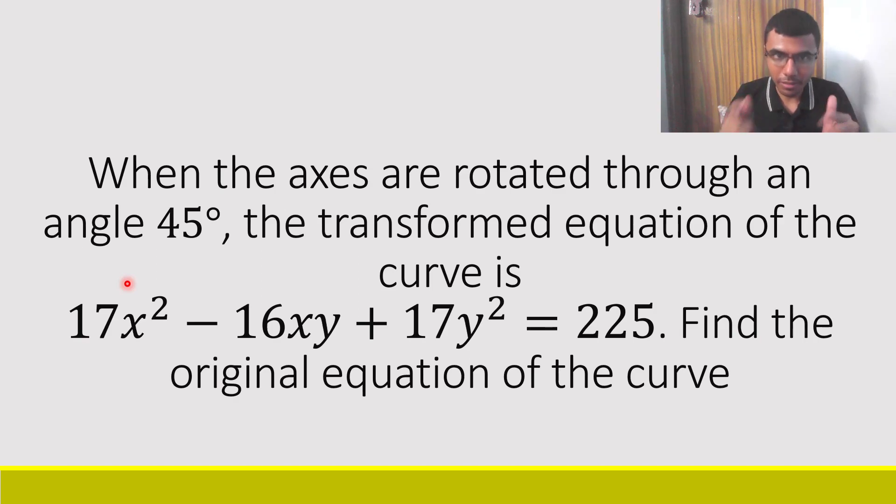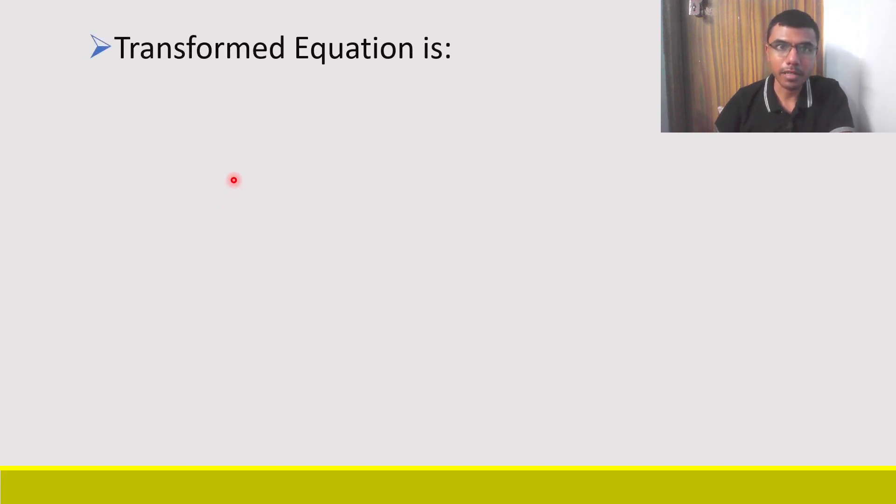Now let us see how to solve this given question from transformation of axis. Here we are given that the transformed equation of the curve is 17X² - 16XY + 17Y² = 225, and we need to find out the original equation of the curve.